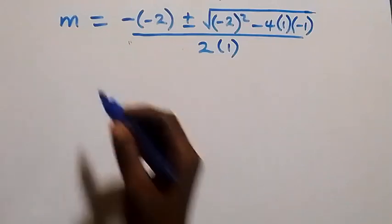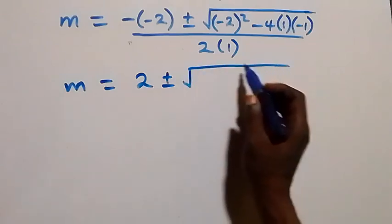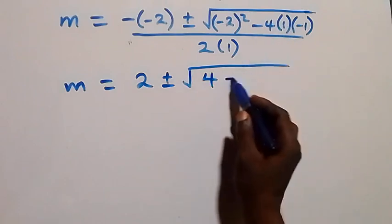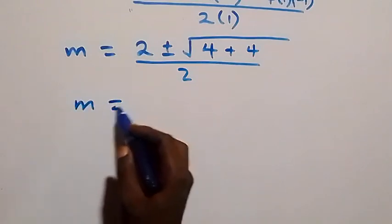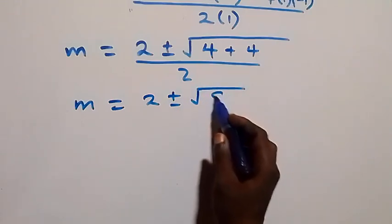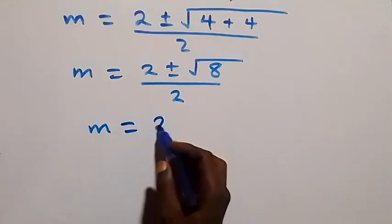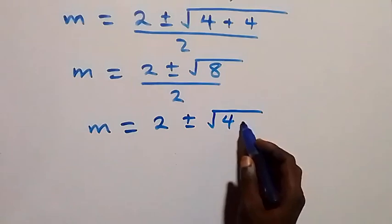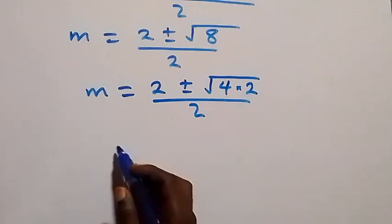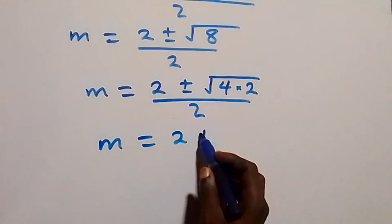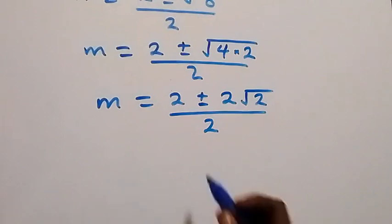When we solve this further: minus times minus is plus, so we have m equals 2 plus or minus square root of (4 plus 4), which we can also write as square root of 4 times 2, over 2. Separating: root 4 times root 2 gives m equals 2 plus or minus 2 root 2, over 2.